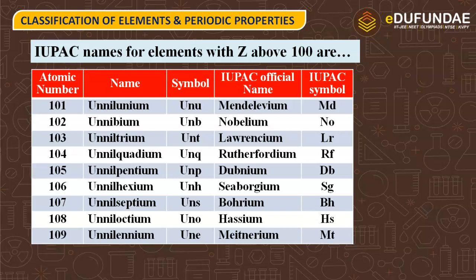If the atomic number is 101, the digits are 1, 0, 1 — that is un, nil, un — and the name will end with 'ium,' so the IUPAC name is Ununnilium and the symbol is Uun, with the first letter of the symbol capitalized. When the official name was confirmed, it became Mendelevium with the symbol Md.